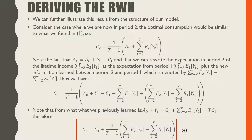We can further derive this result from the structure of our model. Consider the case where we are now in period 2, and the optimal consumption would be similar to what we found in equation 1: consumption in period 2 equals 1 over T minus 1, which is the number of periods remaining, times A1 plus the summation of all expected labor income flows from period 2 to T based on the information in period 2. Note that A1 equals A0, our initial endowment, plus the labor income in period 1 minus consumption in period 1. And we can rewrite the expectation of period 2 lifetime income as the expectation of all labor income flows based on information in period 1, with the addition of the new information learned between these two periods.